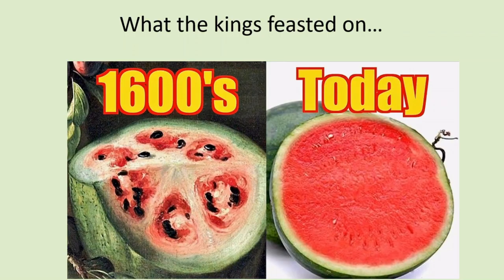Another interesting metaphor is when we talk about eating like a king. We imagine the kings of the past had wonderful food, but that is not the truth. In the 1600s, for example, maybe the queen of England had a fruit like this for dessert — an image with many seeds and only a little edible part. But through selective breeding today, we have this kind of watermelon with so much more food. Today, even the ordinary person in the street eats better than the kings ate in those days.